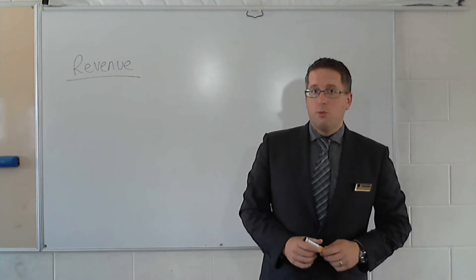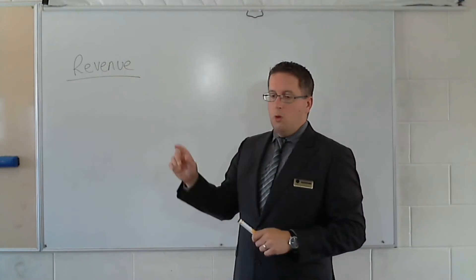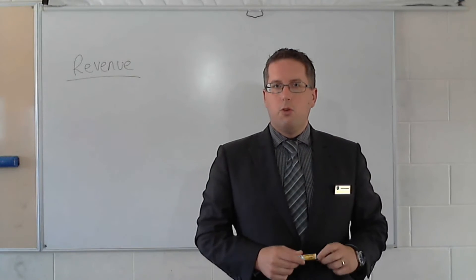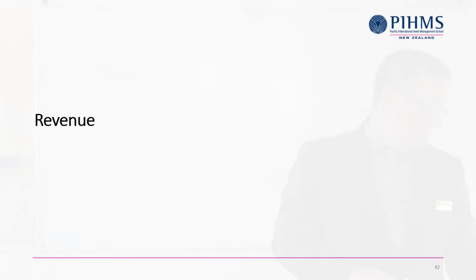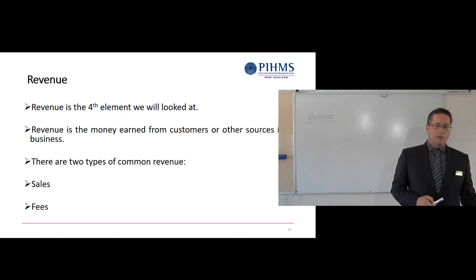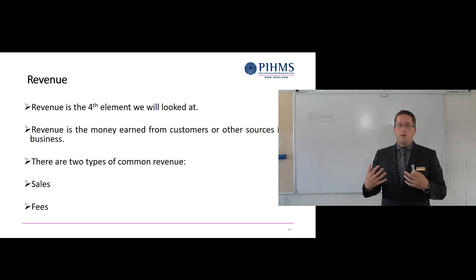We've been going through the elements — we've covered off assets, liabilities, and owner's equity. Time to get into revenue. Revenue is quite exciting because this is where a business earns its money. Revenue, or you might know it as income, is the money earned from customers or other sources in a business. Any time that you make a sale and a customer comes in and gives you money, that's going to be a revenue item.